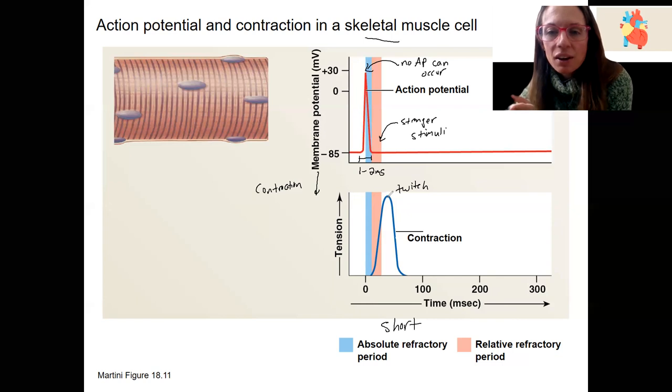So if we wanted to have another action potential and another muscle contraction, continued muscle contraction occur, we could have that add on to here. Because even the relative refractory period is over before we even reach the peak of our contraction.